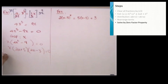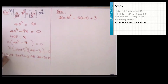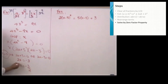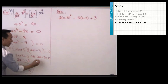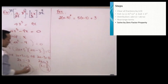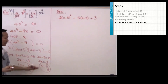Either x equals zero, or 2x plus 3 equals zero, or 2x minus 3 equals zero. Solving each: x equals zero is already solved. For 2x plus 3 equals zero, I subtract 3 from both sides then divide by 2 — my solution is negative three halves. For 2x minus 3 equals zero, I add 3 to both sides then divide by 2 — I have three halves. The degree is three, so I have up to three solutions: zero, negative three halves, and three halves.